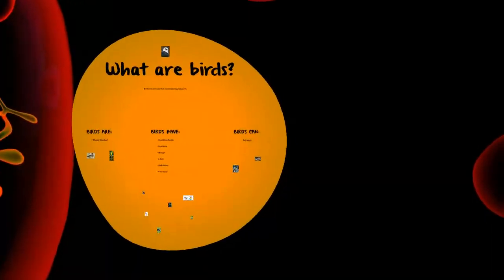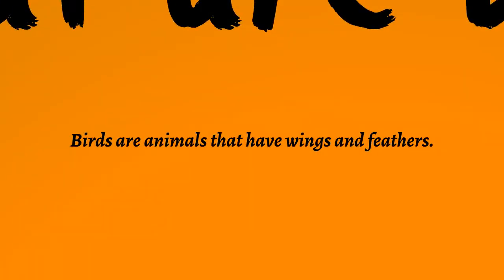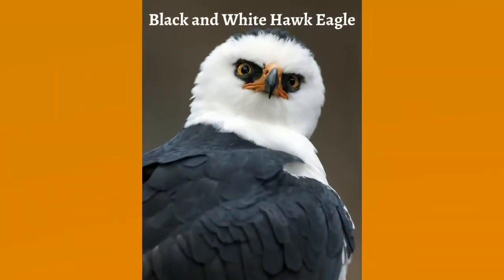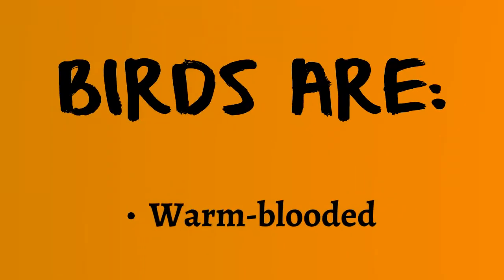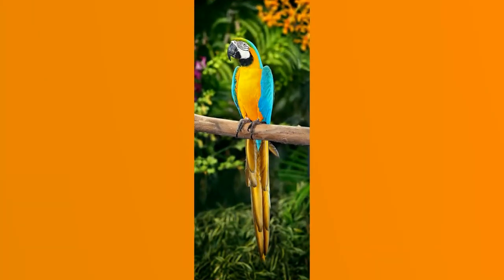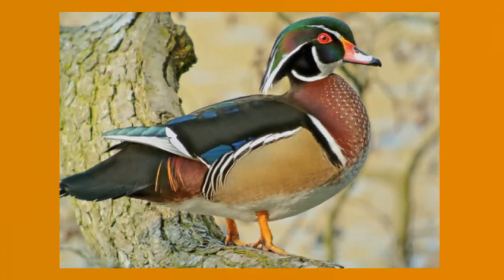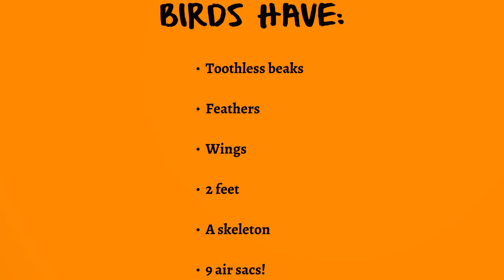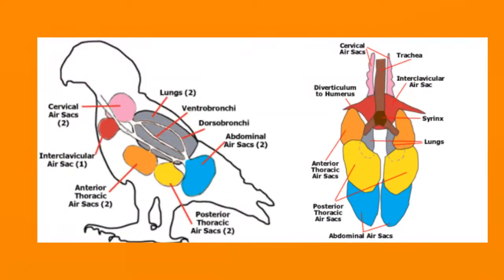Birds are animals that have wings and feathers — this is a black and white hawk eagle. Birds are warm-blooded. Birds have toothless beaks, feathers, wings, two feet, a skeleton, and nine air sacs. Those nine air sacs are something completely different from any other animal — they help the bird take flight and keep up with other birds. Without these air sacs, the bird wouldn't be able to fly, which is what makes birds so special.